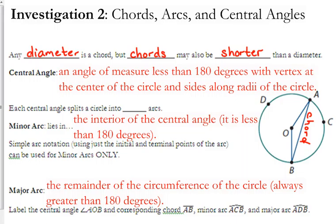You could have a segment connecting C and B. That would be considered a chord. So it's just a segment connecting two points on a circle. But we're going to focus more on the angles. You need to write down the definition there for a central angle.